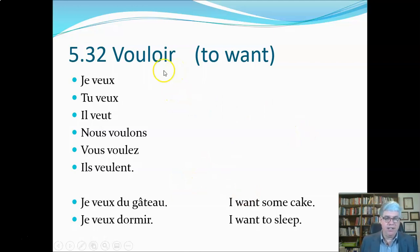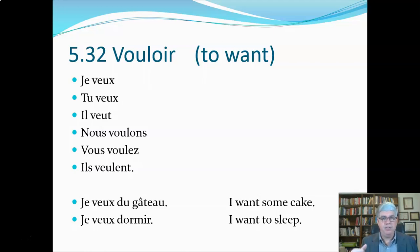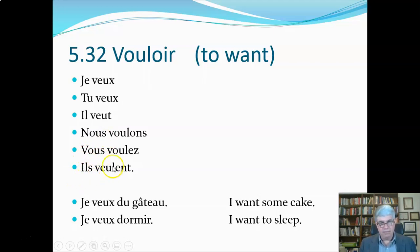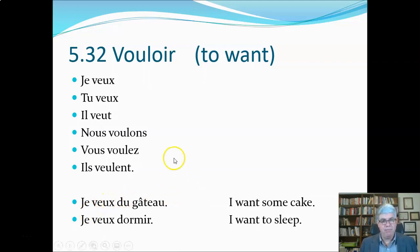Now here's vouloir — it's conjugated like pouvoir and it means 'to want.' We get our word 'volitional' from vouloir, meaning decisions made because you wanted to do something out of your own free will. Je veux, tu veux, il veut — again X-X-T with a veu stem — 'I want,' 'you want,' 'he wants.' Nous voulons, vous voulez — V-O-U-L stem — 'we want,' 'you want.' And then a third stem V-E-U-L: ils veulent, 'they want.' Example sentences: je veux du gâteau — 'I want some cake.' Je veux dormir — 'I want to sleep.' There are politer ways to say these things; for example, 'I would like some cake' instead of 'I want some cake,' and we'll come back to that.